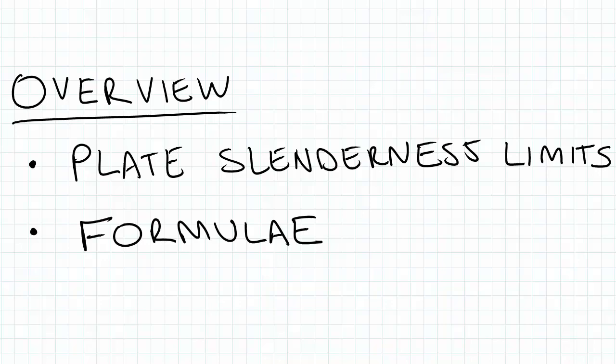So just to give a brief explanation, the plate slenderness limits form basically part of the calculation to find the section capacities, that is phi ms, and essentially whether our sections are compact, non-compact or slender. And using these slenderness limits, we can find out that moment capacity, and I will be going through some of the formula to calculate that moment capacity as well later in the video.